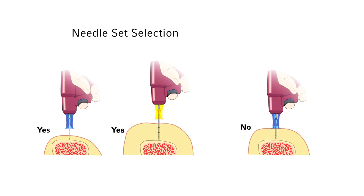Using a needle set that is too short will increase the risk of catheter dislodgement, leading to extravasation, create a hole in the bone unnecessarily, and render the site unusable for future IO access for a minimum of 48 hours.